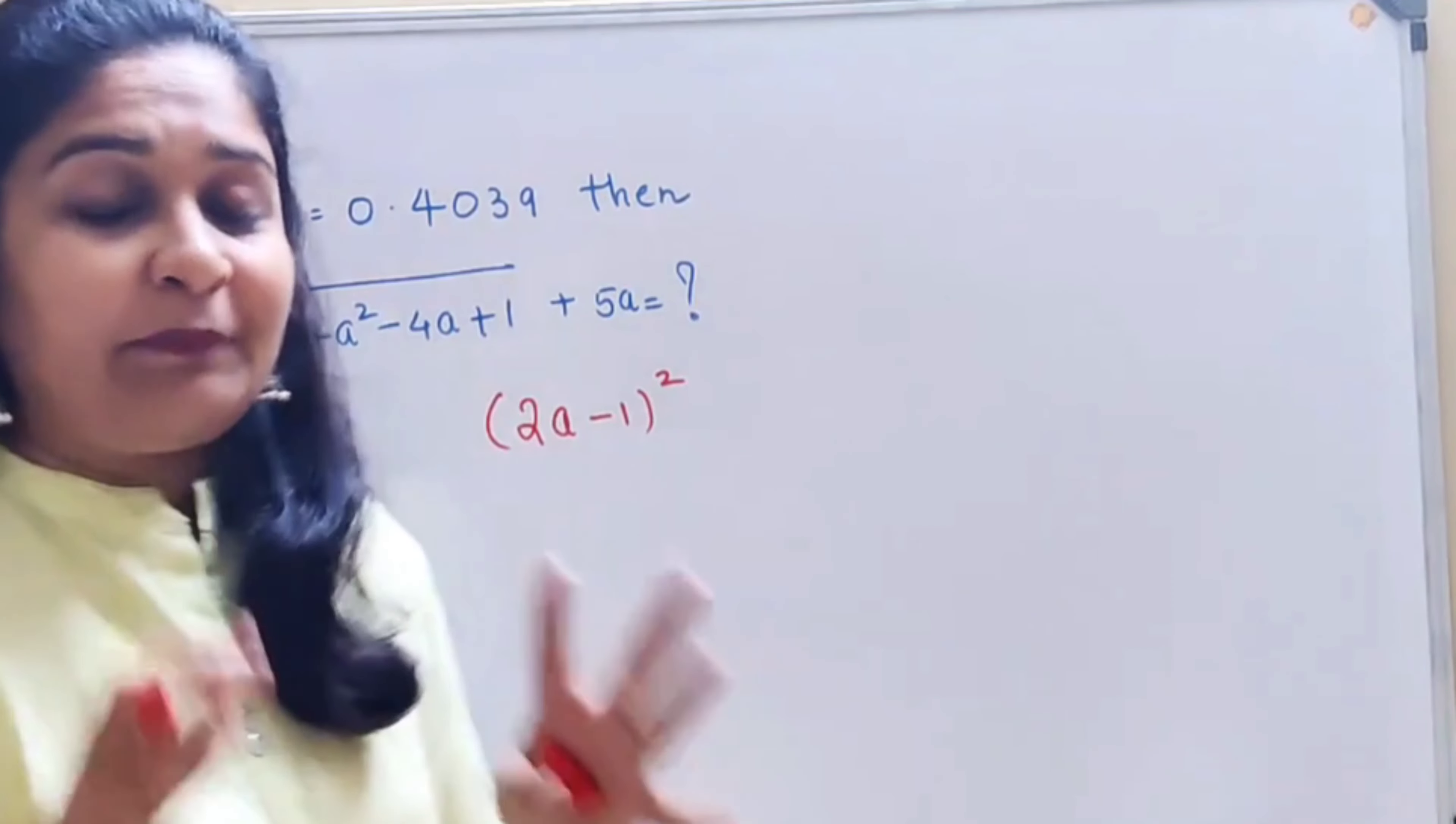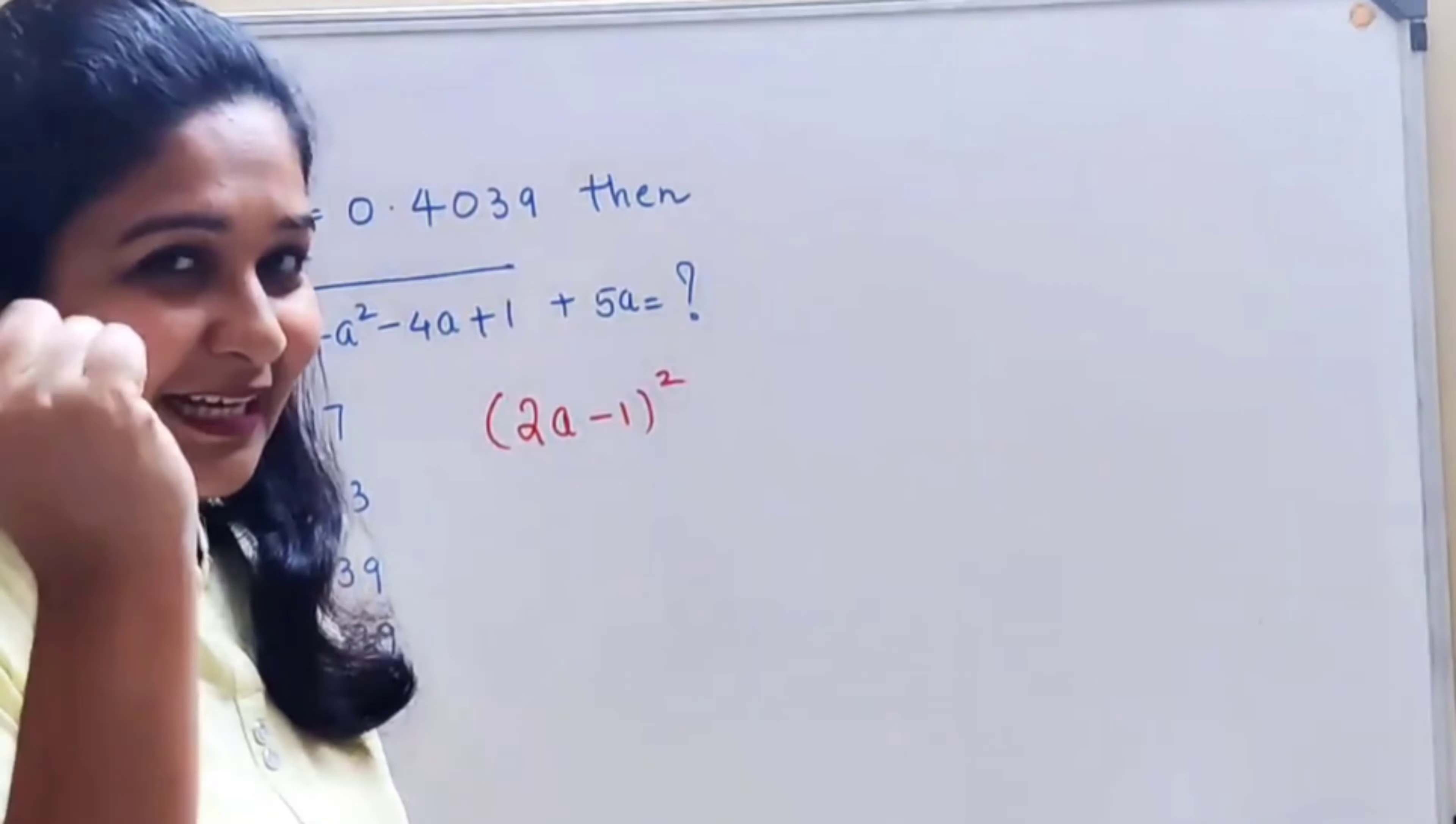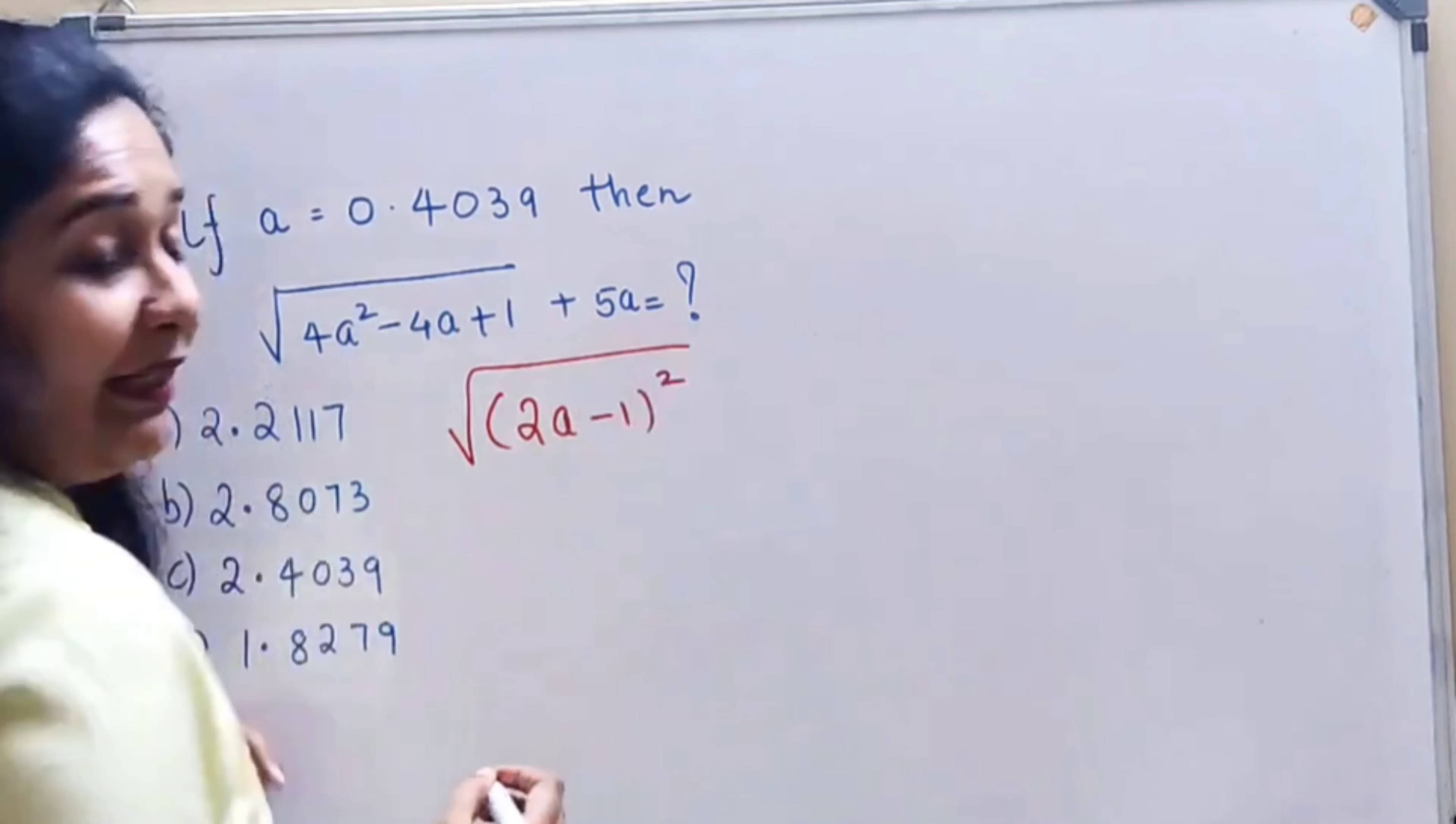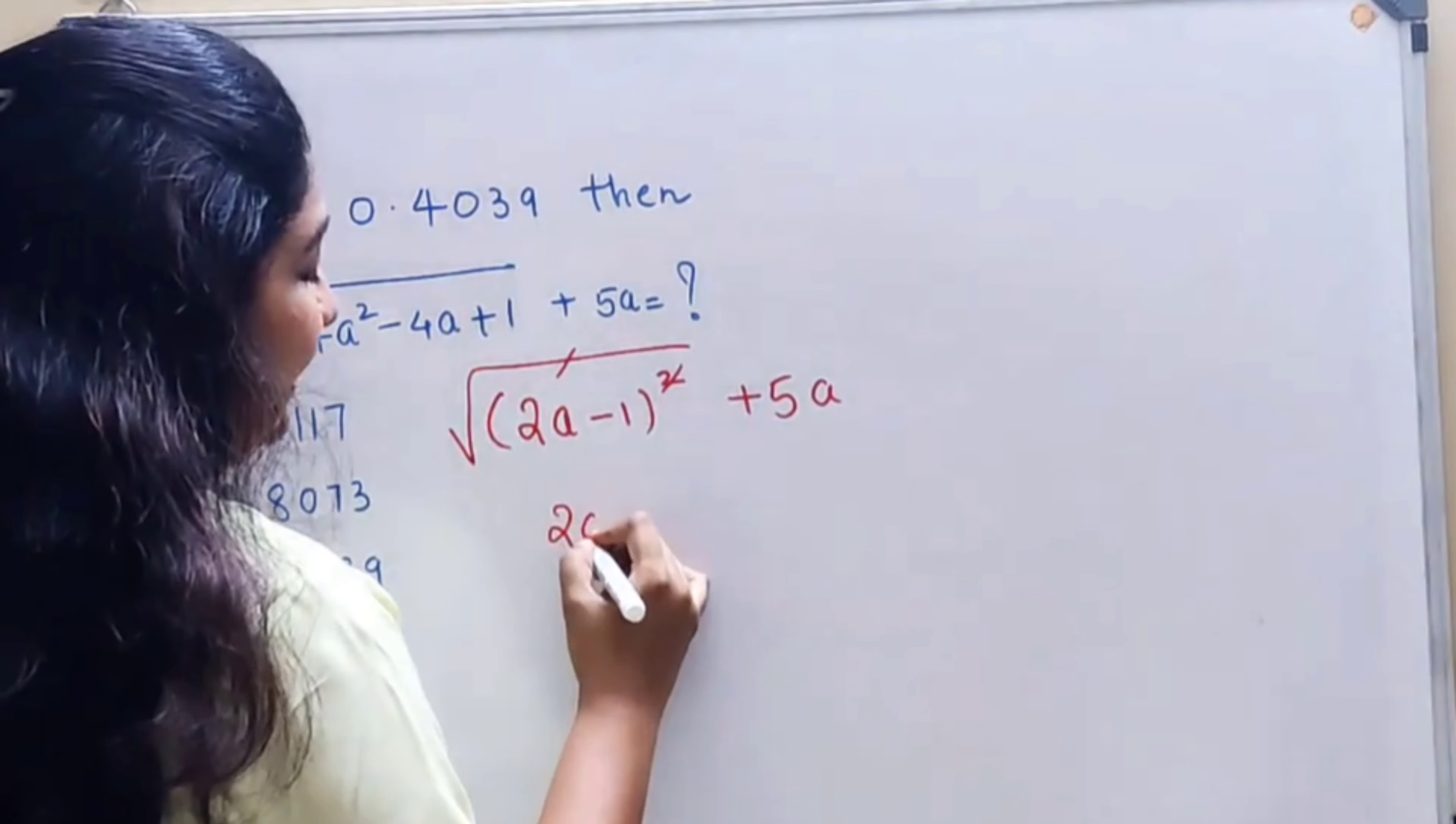So a lot of people got stuck over there, and I'll show you a very little tweaking with which you can actually solve this really easily. Here now, obviously there's a root ahead and we'll keep +5a as it is.